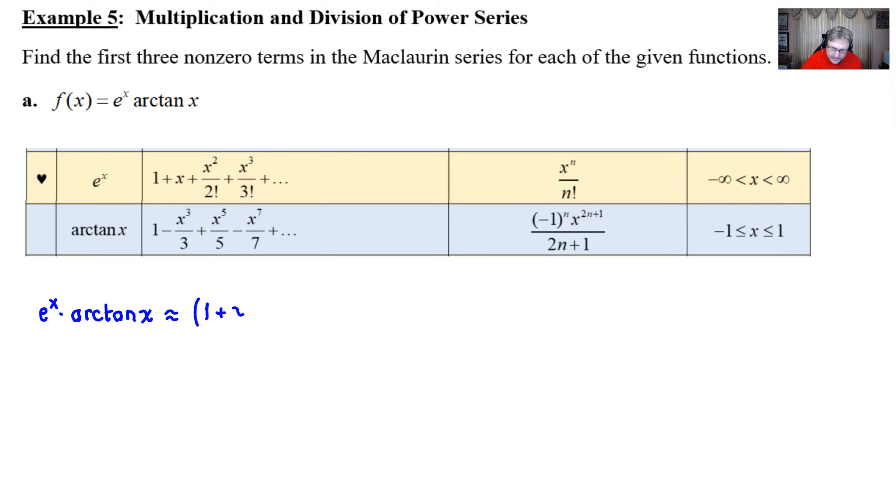But the bottom line is that you are just simply taking the e to the x function or power series for that function, one plus x, plus x squared over two factorial, plus x cubed over three factorial, plus some other stuff. And you're going to multiply that by one minus x cubed over three, plus x to the fifth over five, minus x to the seventh over seven, plus some other stuff. And there you have it.